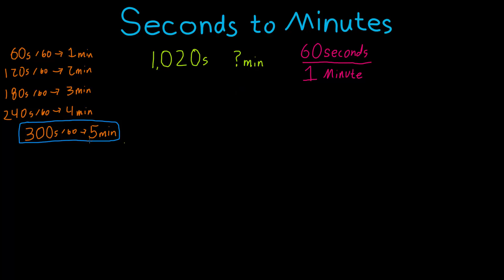The important number to remember for big ones is 300 seconds is the same as 5 minutes. That is easier numbers to remember. And this is going to help us, this 300 seconds per 5 minutes. That's going to help us when we solve for this 1020.